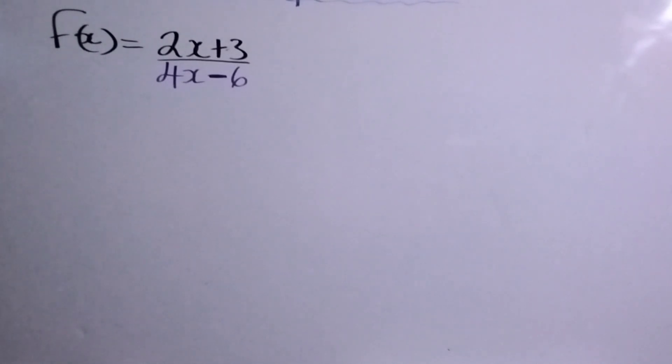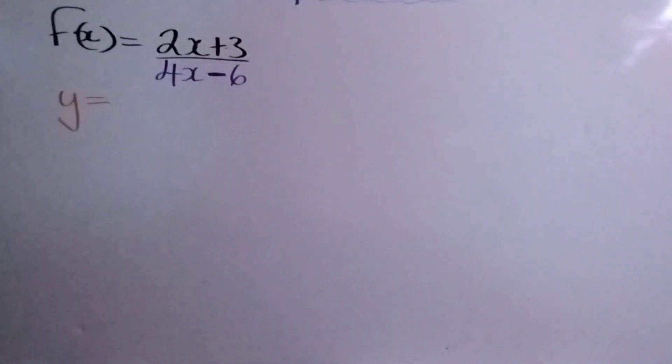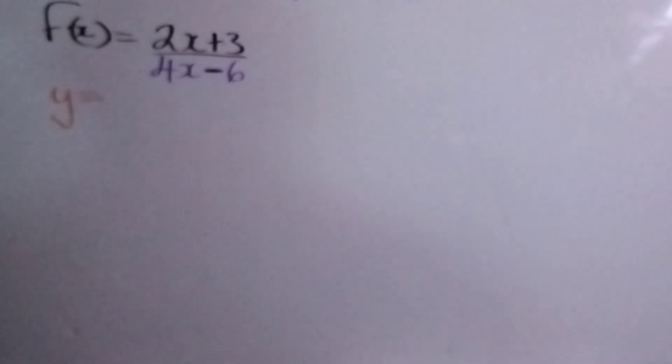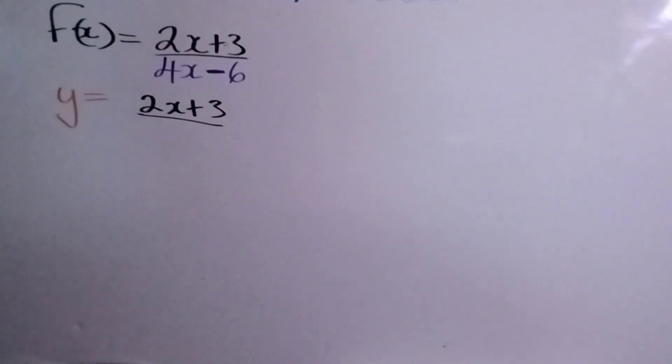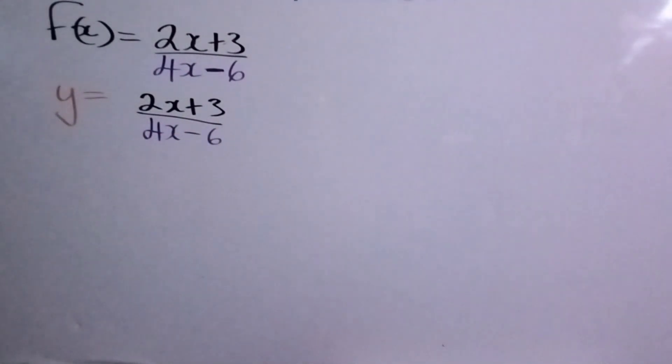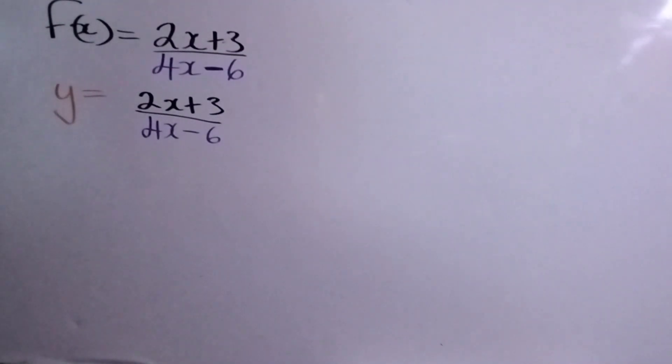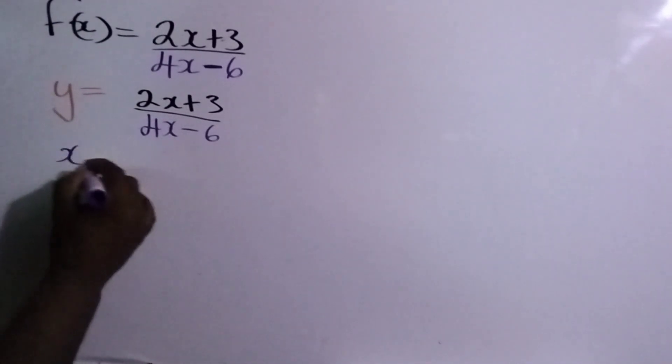All right, let's go. So the first thing we do is change the function to y. We can't do that, it's a graph. So we're going to say y is equal to all of this, so it's 2x plus 3 divided by 4x minus 6. The next step we're going to do is to interchange x for y and y for x. So anywhere x is we'll put y, and anywhere y is we'll put x.